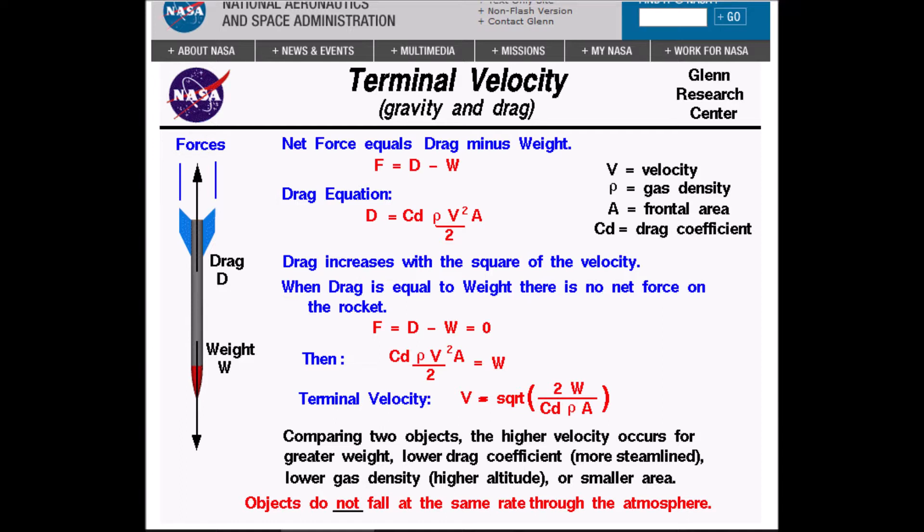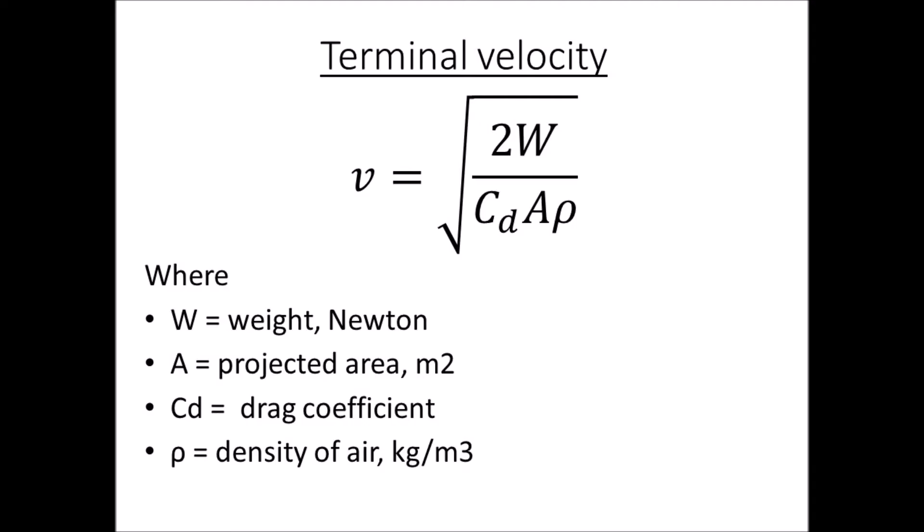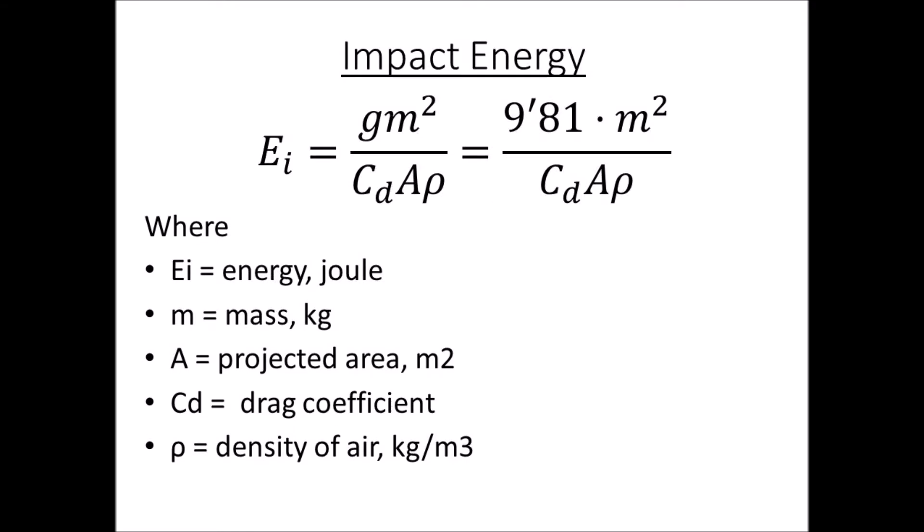This speed is calculated with the following formula, which depends on the weight of the aircraft, the area exposed to the air, the density of the air, and the drag coefficient. If we merge both formulas, we get the impact energy as a function of area, mass, density, and drag coefficient.